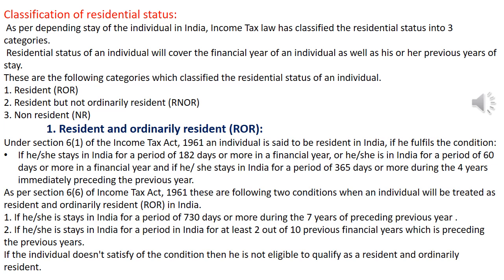As per Section 6, Clause 6 of income tax, two additional conditions apply to become Resident and Ordinarily Resident. These are: if he or she stays in India for a period of 730 days or more during seven preceding previous years; or if he or she has been a resident of India for at least 2 out of 10 previous financial years preceding the previous year. If both these conditions are satisfied, the individual qualifies as ROR.